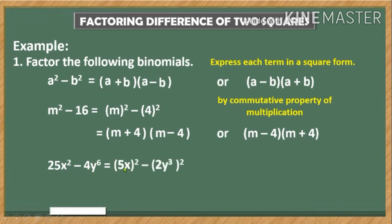We have the square of 5x, because when you multiply 5 by itself the product is 25. Then 2, because when you multiply 2 by itself the product is 4. Now how did we get 3? Well, 6 here is divided by 2 and the quotient is 3, and we enclose these terms and raise to the power of 2.